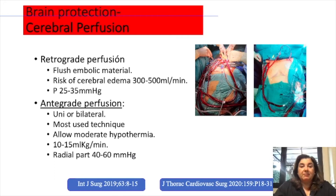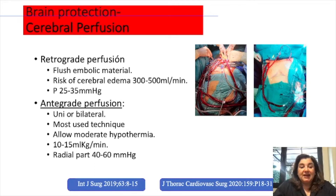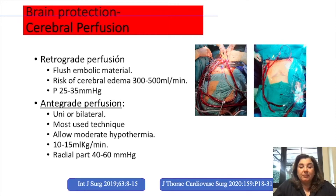For cerebral perfusion, techniques include retrograde perfusion and antegrade perfusion, either unilateral or bilateral. The most used technique involves low to moderate hypothermia with a flow of 10 to 15 millilitres per kilogram per minute.